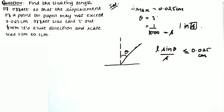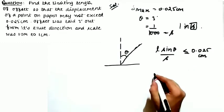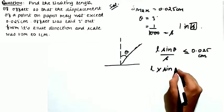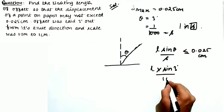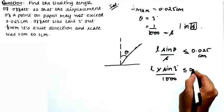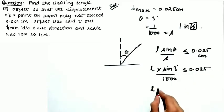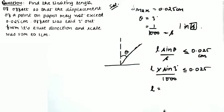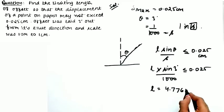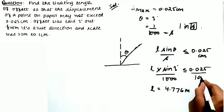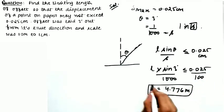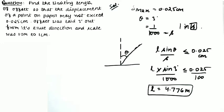So L × sin 3° / 1000 ≤ 0.025. Solving for L gives a maximum offset length of approximately 4.776 meters. This is the maximum length of offset that should be laid for this purpose so that the error on paper does not exceed 0.025 cm.